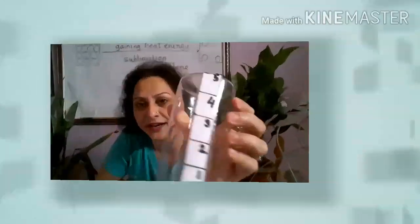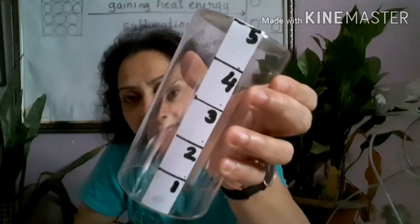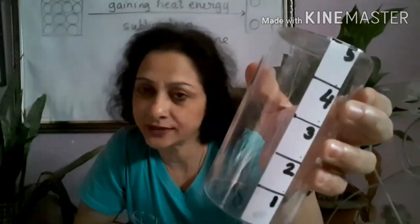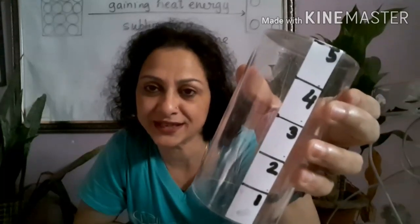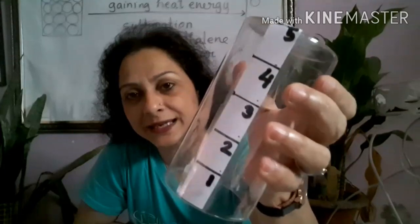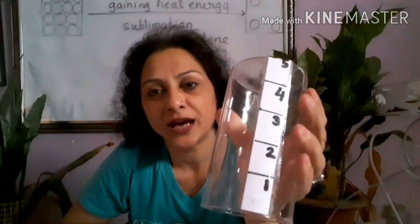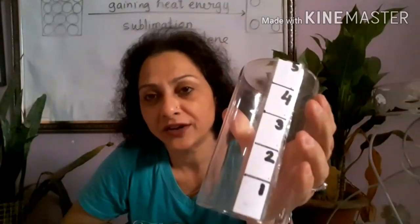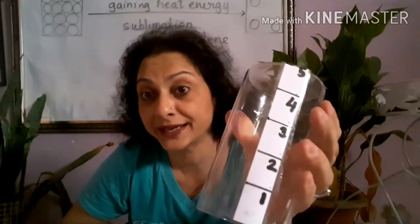Let me prove it with this tumbler here. Any empty tumbler contains air — it's not exactly empty. I have divided it into five parts; you can see the labeling: one, two, three, four, five. Now I'm going to cover it on a burning candle and see what happens.